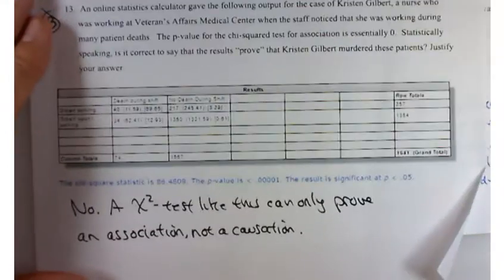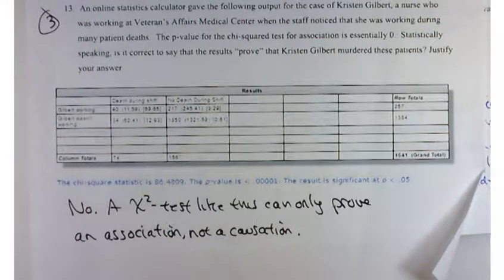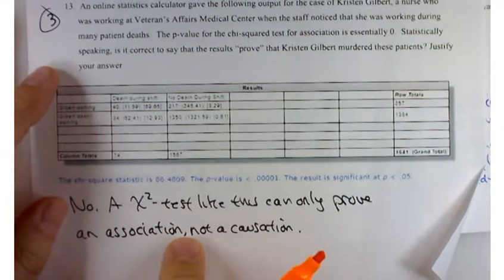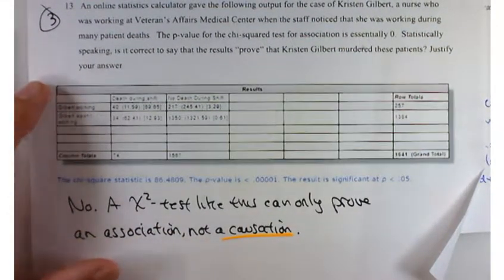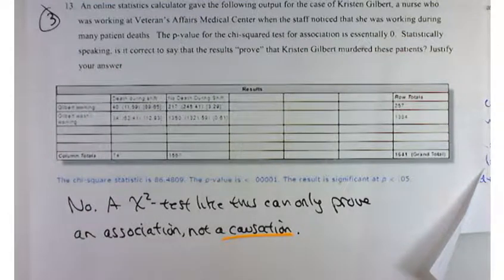You guys did really good on this kind of bonus problem. This is certainly one problem that wasn't in your homework, but it's something that I was very happy to see you did well on. You can't prove anything in terms of a causal relationship with a chi-squared test for independence.